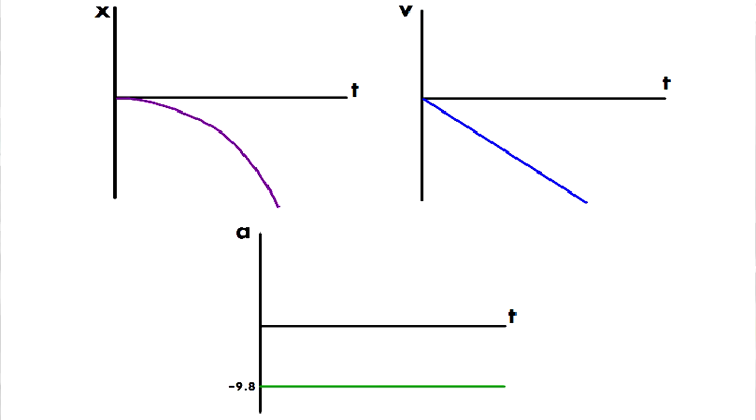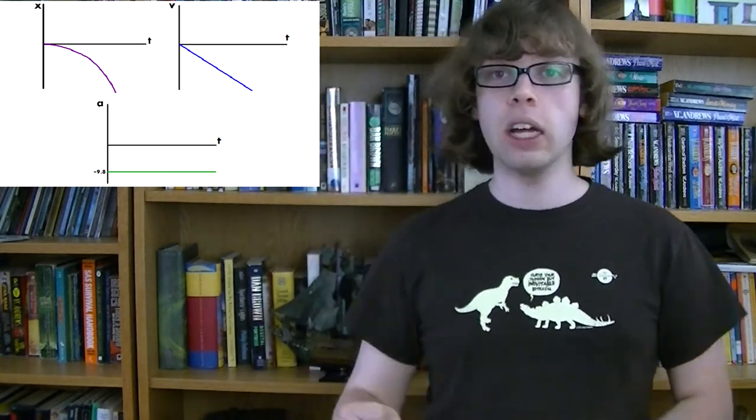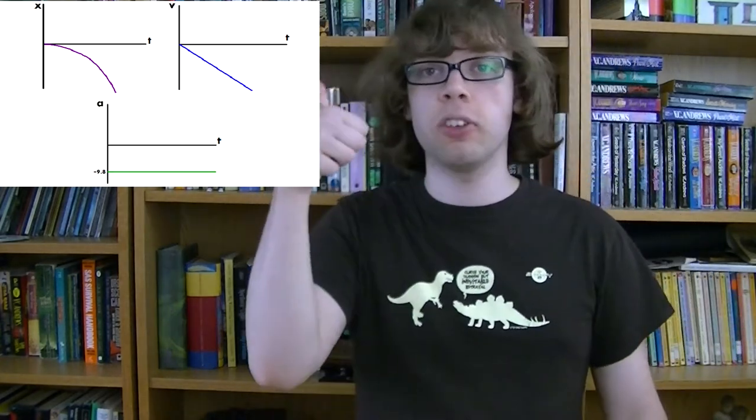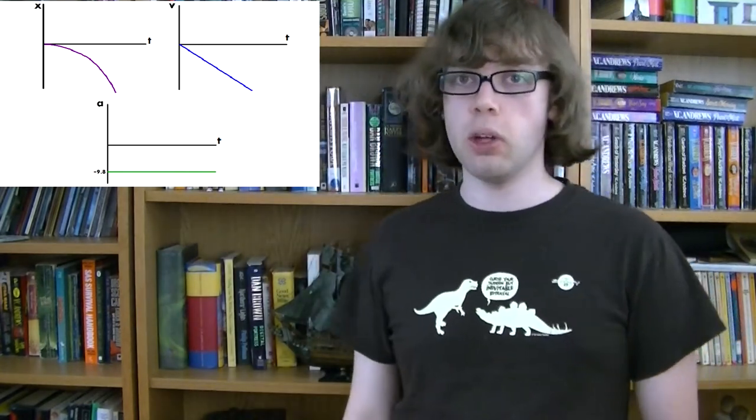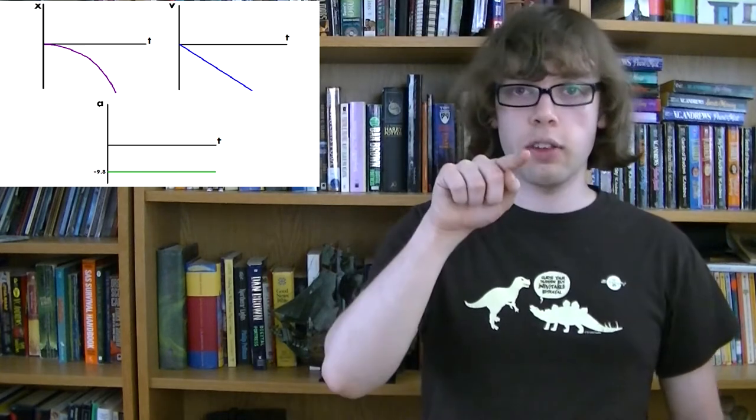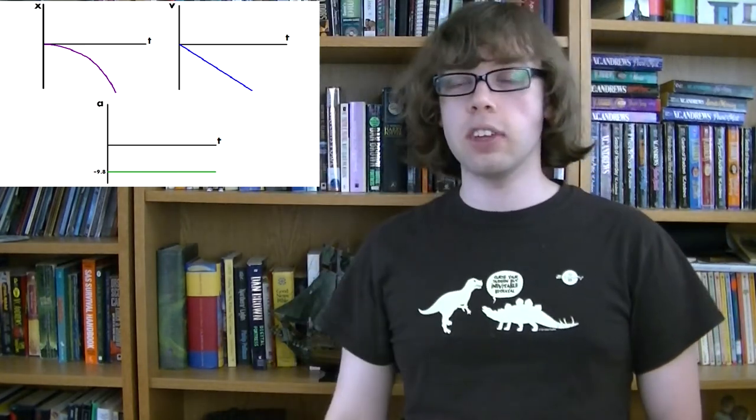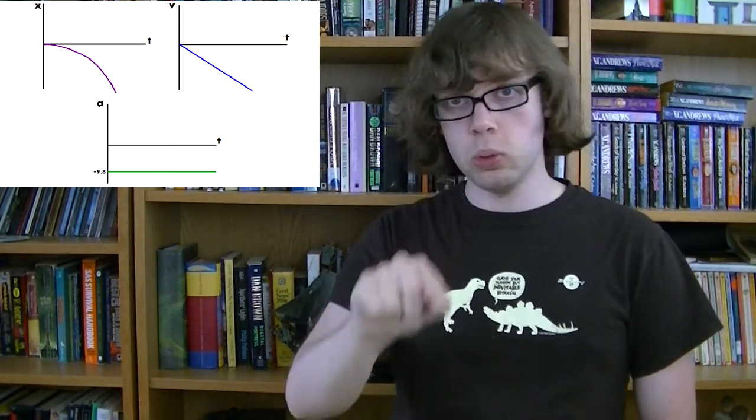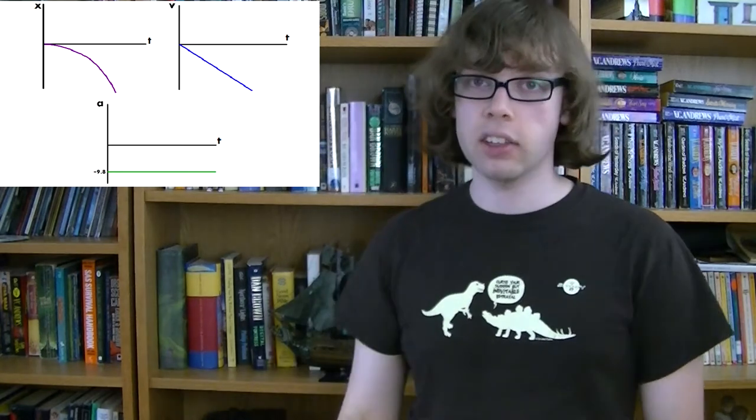If you drew an acceleration time graph of the motion, it would look like this. Just a constant value of negative 9.8 meters per second per second. Why negative 9.8? Well, gravity is pulling things down. And we said that we're going to call up positive and down negative. So down towards the ground is negative 9.8. That's the same reason that on the velocity graph, your velocity is negative because you're going down. And the same reason that your displacement moves in the negative direction because you're getting more and more negative. You're moving down the y-axis.